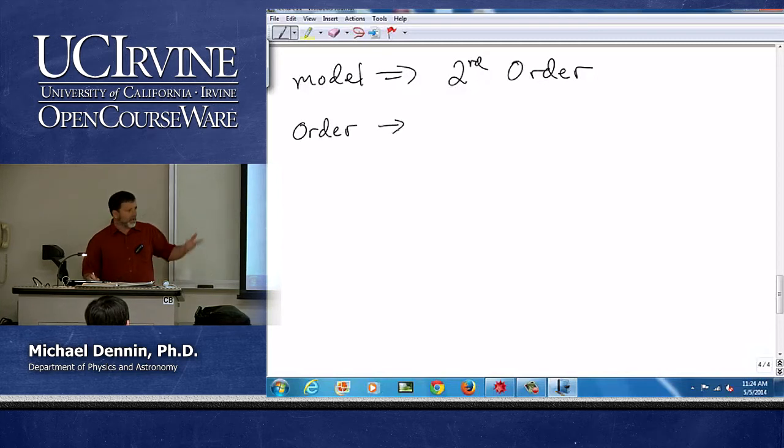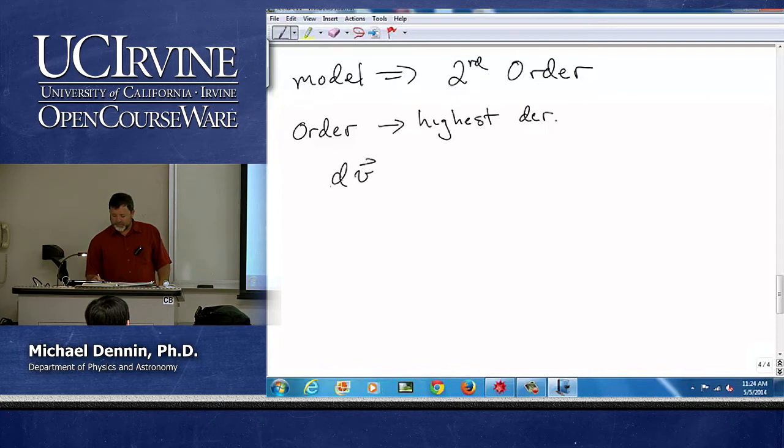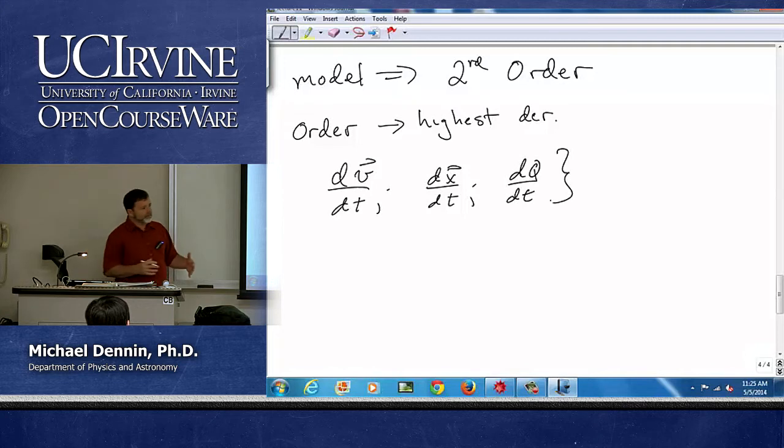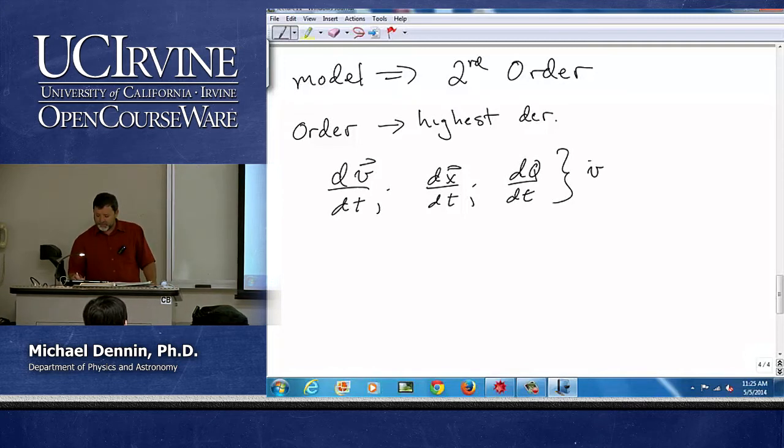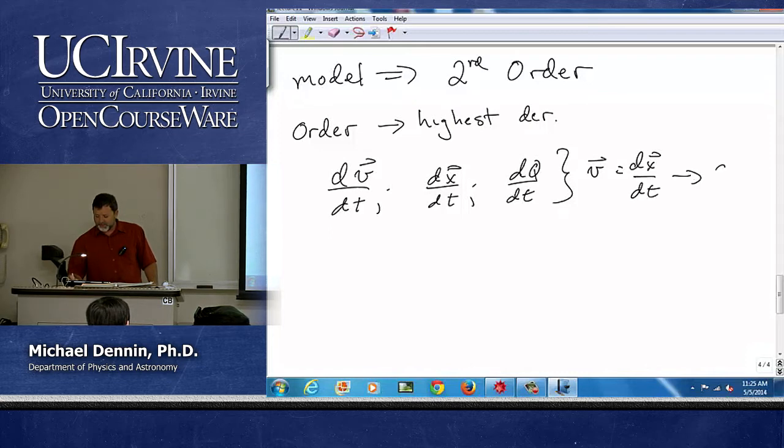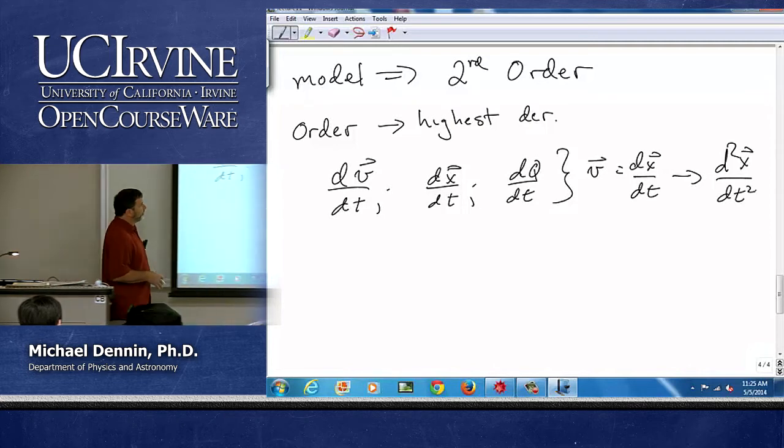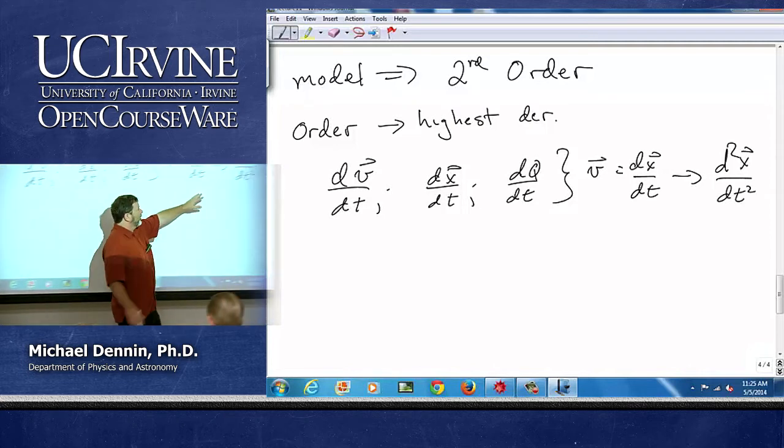The order is the highest derivative you have. Now in physics we're most often interested in single things that are changing: dv/dt, dx/dt, dq/dt, and then occasionally how they combine. So we saw that v being equal to dx/dt and being interested in dv/dt gave us the second derivative, d²x/dt². And that's about as high as we almost ever get.